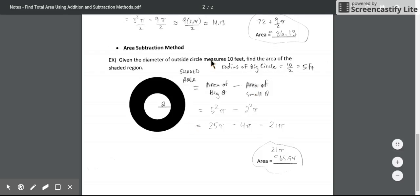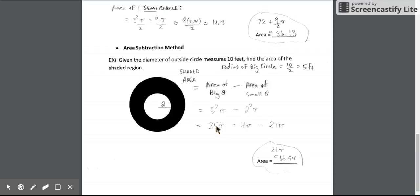Well, we're told that the diameter of the big circle is 10 feet. So the radius must be half of that, 5 feet. So that makes the area of the big circle 5 squared times pi, the radius squared times pi, which is 25 pi. We're given the radius of the small circle is 2 feet. So the area of the small circle must be 2 squared times pi, the radius squared times pi, which is 4 pi.